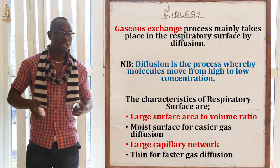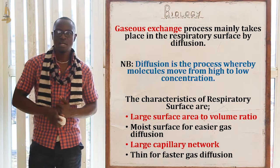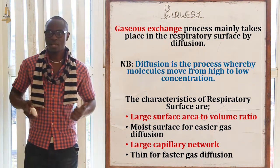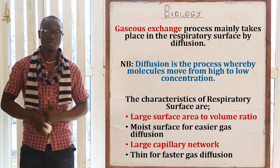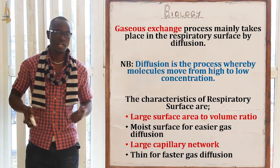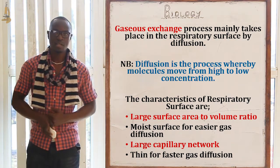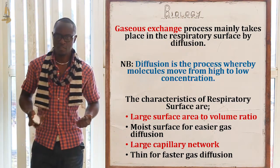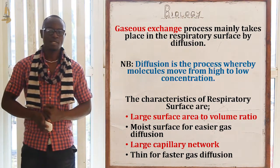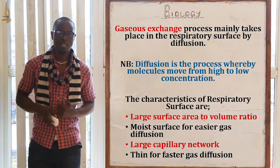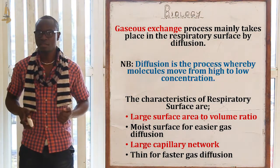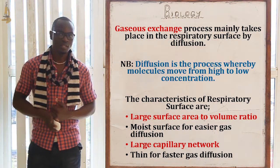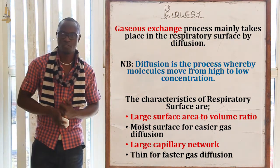Gas exchange takes place at the respiratory surface through the process of diffusion. The characteristics of the respiratory surface include a very large surface area to volume ratio, they must be moist for easier diffusion of gases, they must have a large capillary network, and the surface must be very thin for easier diffusion of gases.